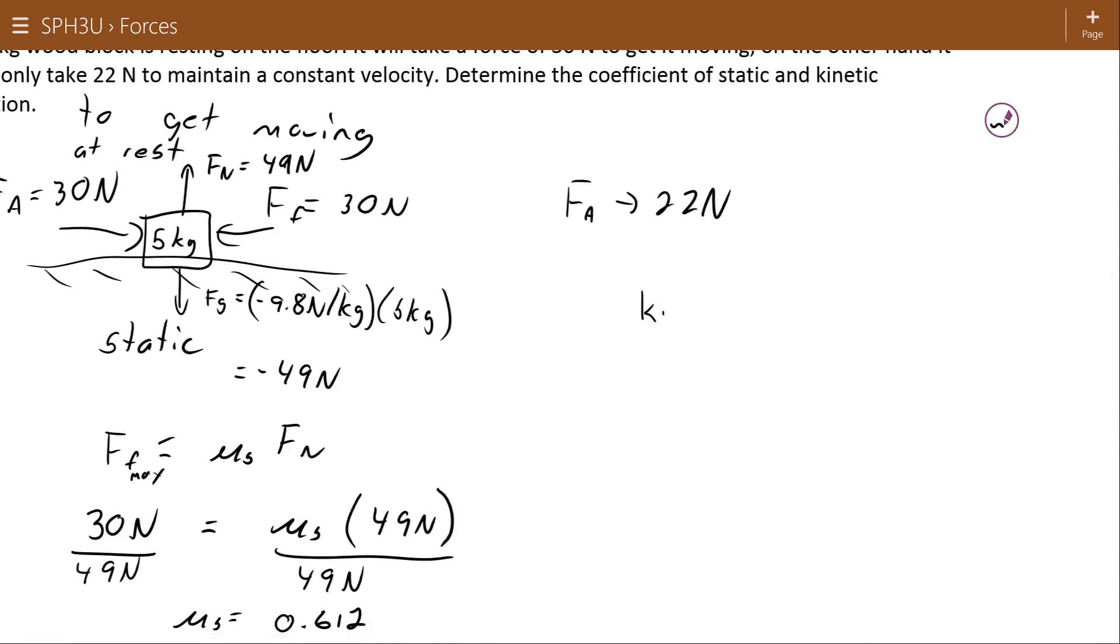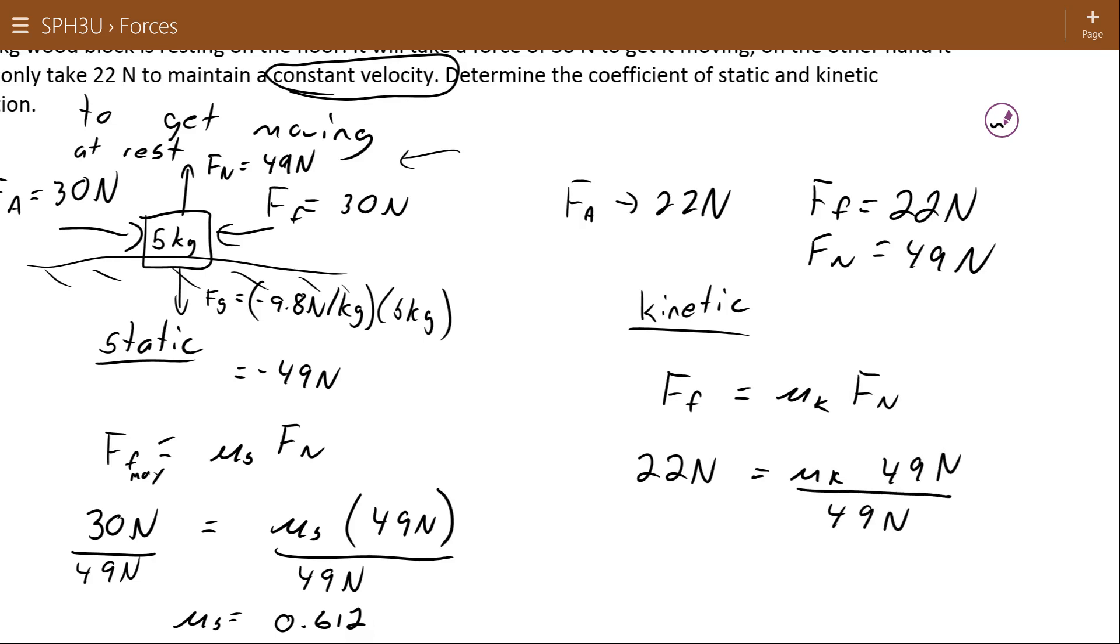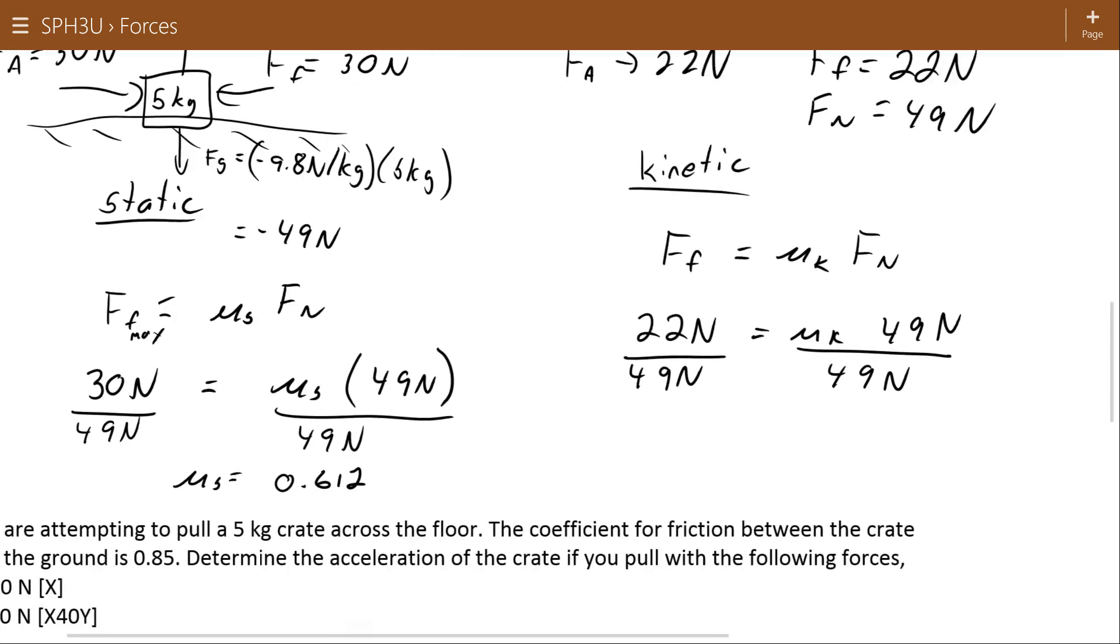On the other hand, looking at the kinetic situation, here I only have an applied force of 22 newtons, and I maintain a constant velocity. So I'm going to assume that my applied force and my frictional force are equal to each other. Everything that's going on in this diagram applies to this situation too, which leads me back to a normal force of 49 newtons. In the kinetic situation, I don't have the inequality, I always have the equals. So I can just go straight to this: 22 newtons, not knowing my coefficient of friction, 49 newtons. Dividing both sides by 49 newtons, I get 0.449.